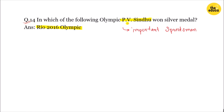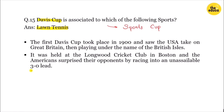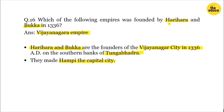Question number 14: in which of the following Olympics did P.V.C. win a silver medal? Next, which of the following empires was founded by Hari Hara and Buka in 1336? The answer is the Vijayanagara Empire, founded in 1336.